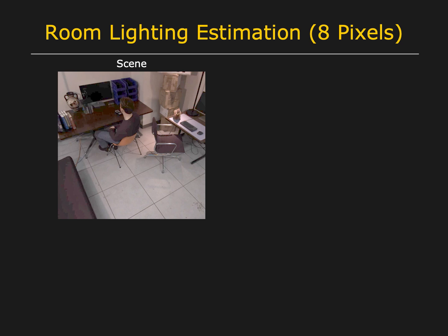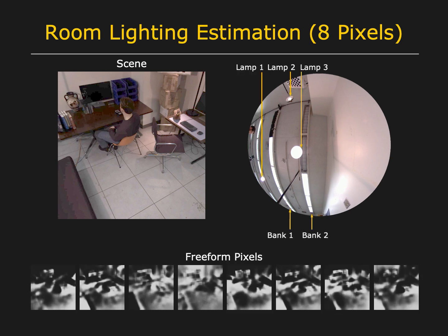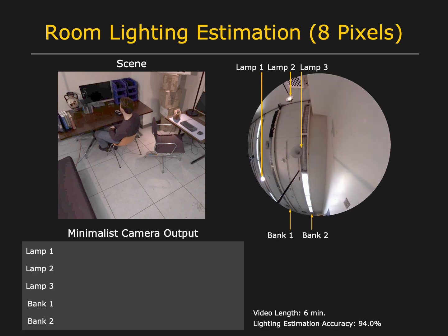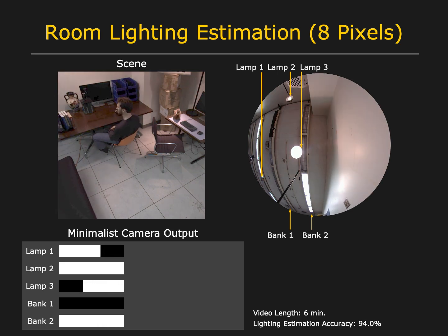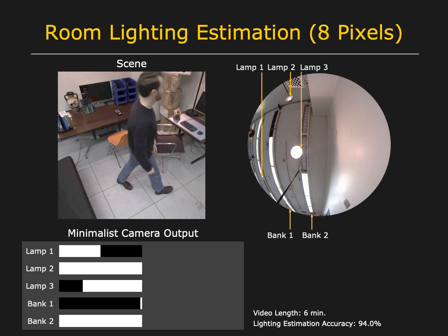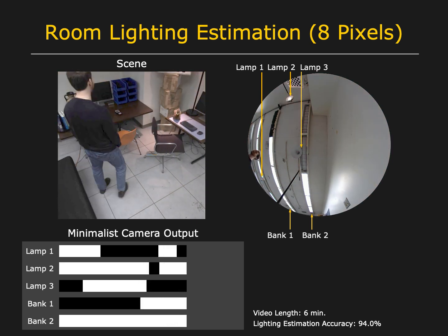In this example, a room is lit by five light sources. The sources can be seen in this fisheye image. There are three floor lamps and two light banks. Using these eight freeform pixels, the minimalist camera was able to accurately determine which light sources were activated at any given time. Here we show the output of the minimalist camera. The black regions correspond to durations for which each light is off. Note that none of the sources were directly visible to the camera. The state of each light was recovered from just the appearance of the room, even as people moved around and obstructed parts of the scene.